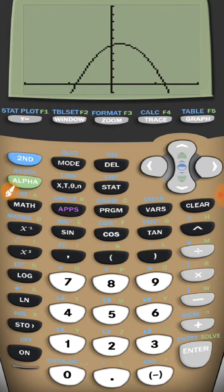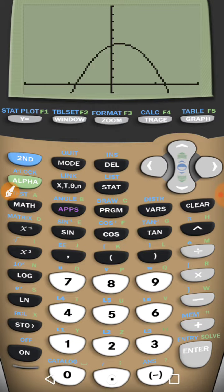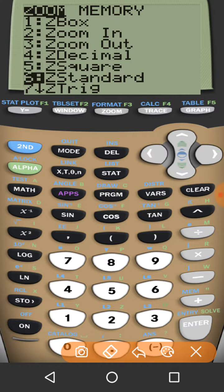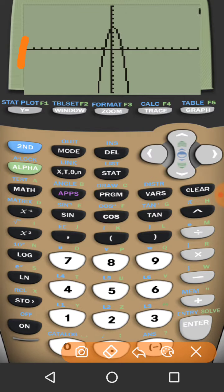The other way to do this, well first of all, let me reset that. I'm going to reset the zoom by clicking on zoom here. When I press that, I want to go down to zoom standard. You can also just press 6 instead of scrolling down. But either way, go down and press enter or 6, and you notice it goes back to negative 10 to negative 10 on the X and the Y.